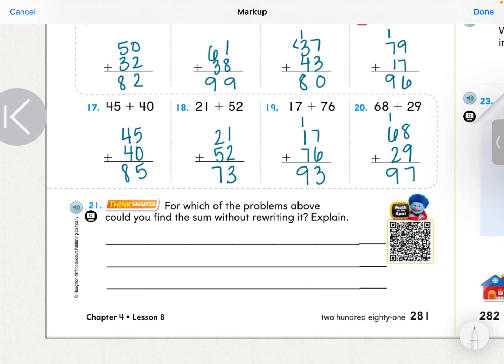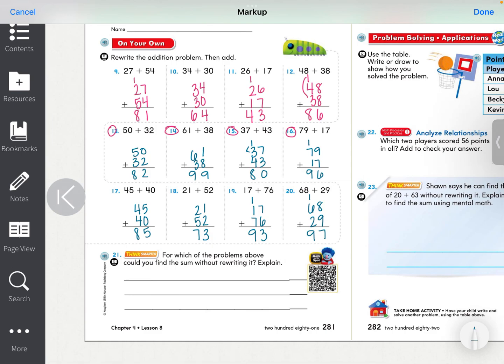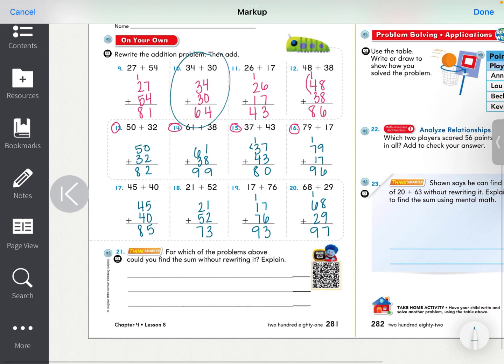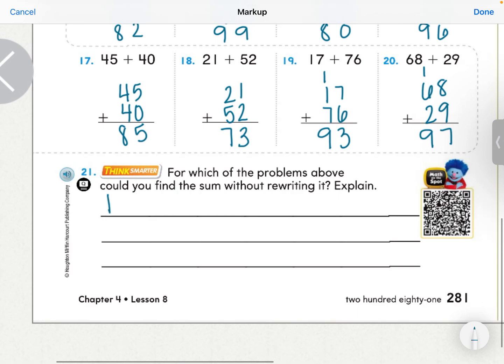Number 21. For which of the problems above could you find the sum without rewriting it? Which one of these, questions 9 through 20, do you feel like you could have solved without having to rewrite anything? If I had to pick one, friends, I'm going to go with number 10. Can you guess why? I can solve number 10 by using mental math. I can start at 34 and count up by 3 tens. 34, 44, 54, 64. So I can count on by 3 tens on number 10.